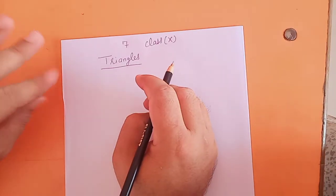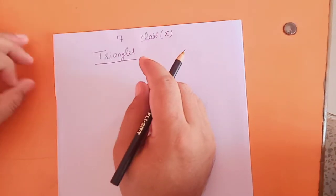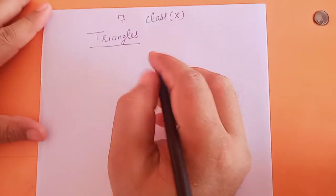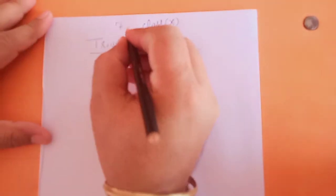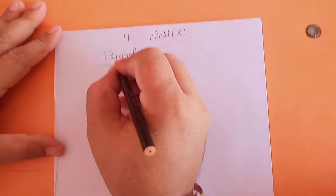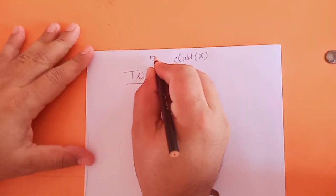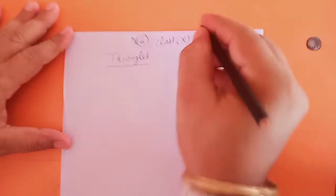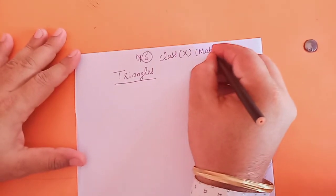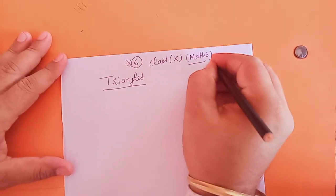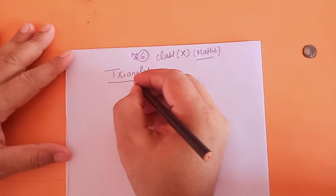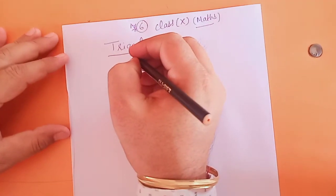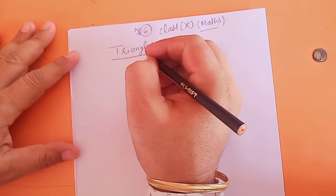Good afternoon students, how are you? I am thinking you are feeling well. Today we will start chapter number 6 of 10th class maths. What's the name of the chapter? Triangles. In this chapter we will read about the similarity of triangles.